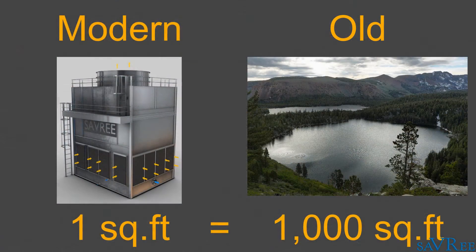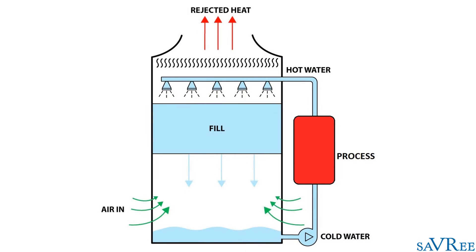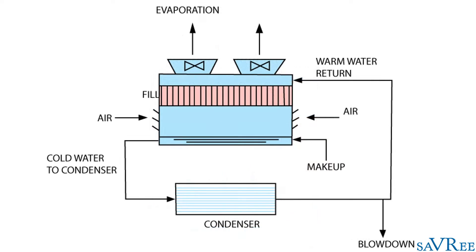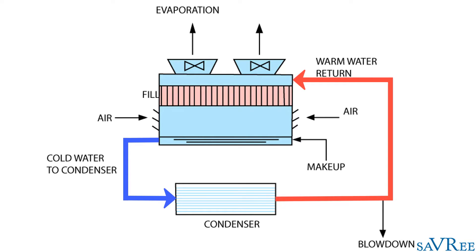Modern cooling towers require as little as one square foot of area to obtain the same cooling effect as 1,000 square feet of a natural heat sink. Additionally, water in cooling towers is recirculated, which drastically reduces operating costs compared to a once-through cooling system. This typical cooling tower arrangement shows water being taken from the cooling tower to a condenser, then back to the cooling tower. The cooling water temperature increases as it passes through the condenser and reduces as it passes through the cooling tower. The cycle repeats continuously.